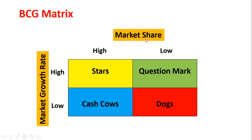When market share is high and market growth rate is also high — both are high — we call it Stars. And when market share is high but market growth rate is low, we call it Cash Cows.